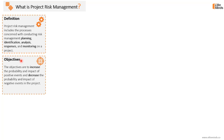Why do we conduct project risk management? The objectives are to increase the probability and impact of positive events, which are known as opportunities. We want to increase the probability of having opportunities on the project and increase their impact. At the same time, we want to reduce or decrease the probability and impact of negative events. Risk is not necessarily negative — a risk can be a threat, which has a negative impact, or it can be an opportunity, which has a positive impact on the project.